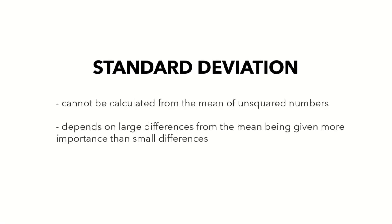Some remarks about standard deviation: it can't be calculated from the mean of unsquared numbers — we really have to square the deviations when computing the variance. Also, standard deviation and variance give larger importance to large differences from the mean than to small differences. Unlike mean deviation, which treats all distances from the mean equally, in standard deviation, since we're squaring the deviations, data points further from the mean will have a disproportionately higher contribution.